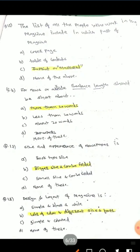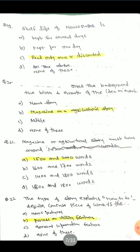Question 18: What is the design and layout of a magazine? Options are: simple and black and white; lots of color and different sizes of fonts; simple and colored; none of these. The correct answer is lots of color and different sizes of fonts.